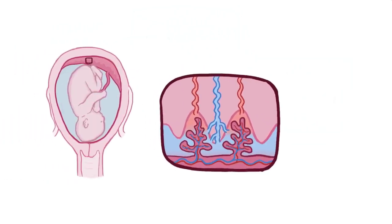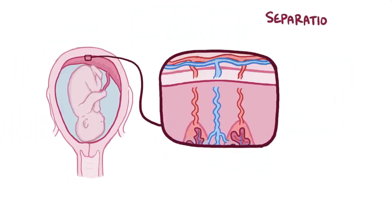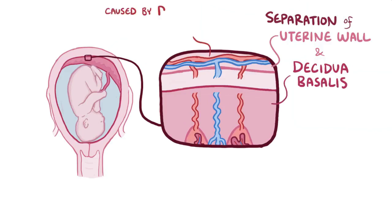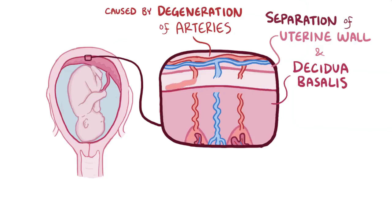Placental abruption happens when there is a separation of the uterine wall and the decidua basalis. This separation is usually caused by degeneration of the uterine arteries that supply blood to the placenta, typically from chronic problems like smoking or hypertension. Those diseased vessels rupture, causing hemorrhage and separation of the placenta.